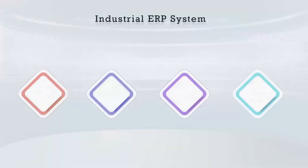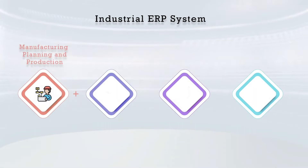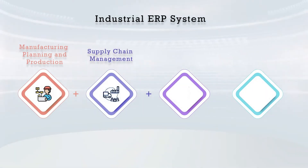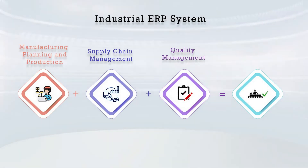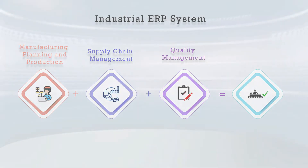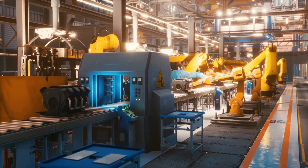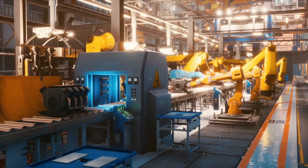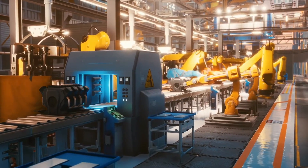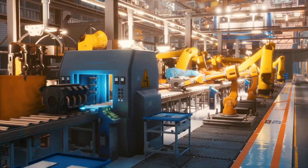An industrial ERP system that has these three core components — manufacturing, planning and production; supply chain management; and quality management — should be sufficient to meet the needs of most industrial manufacturers. Companies with more complex manufacturing needs can look for additional capabilities to help them run their operations.